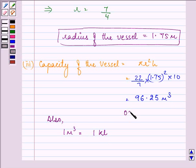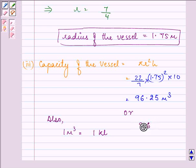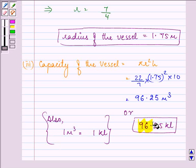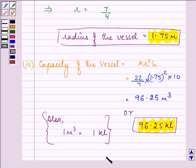So we can write the capacity of the vessel as 96.25 kiloliters. So this is the required answer to the third part. Hope you enjoyed and understood it well. Have a nice day.